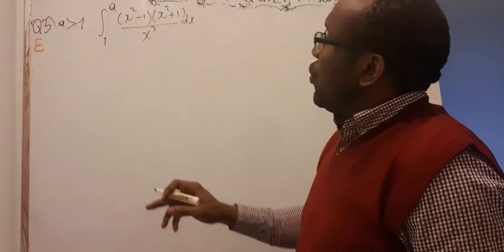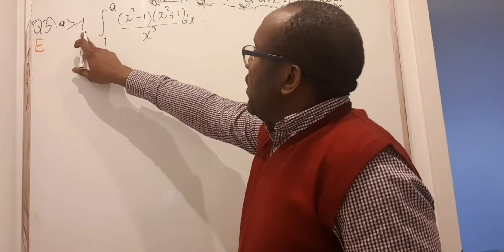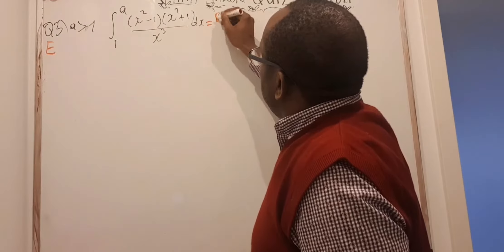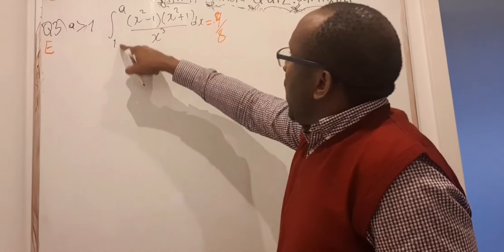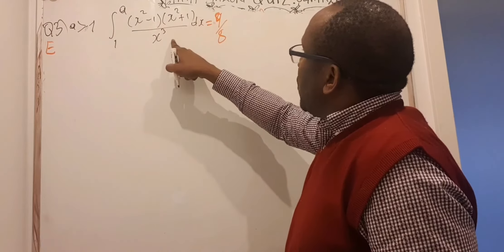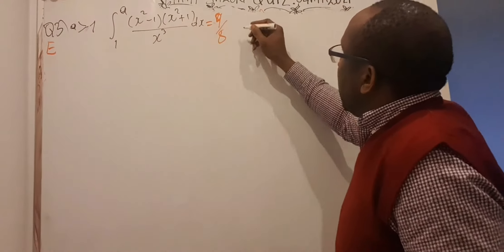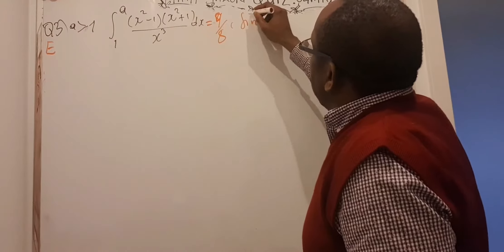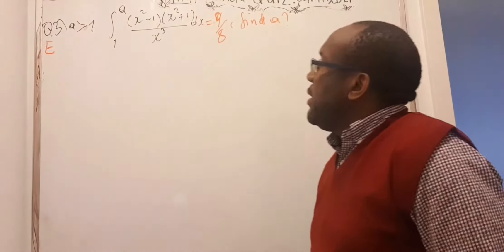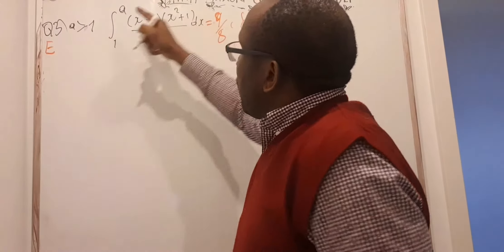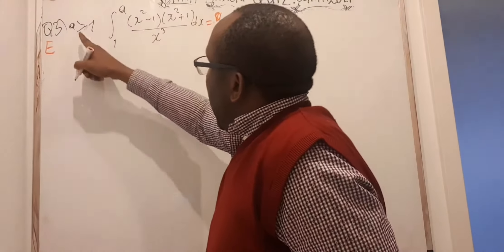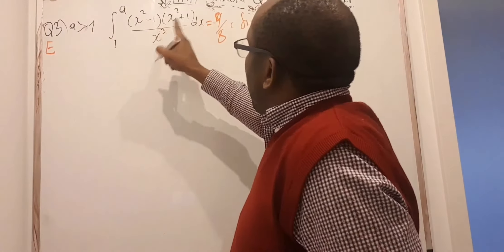The next question, question number 3, said: if A is greater than 1, and the integral from 1 to A of (x² − 1)(x² + 1) divided by x³ dx is equal to 9/8, find A. That was what the equation required — given that A is greater than 1 and this integral equals 9/8, look for A.